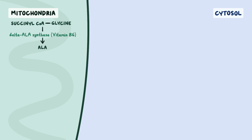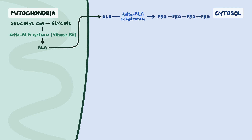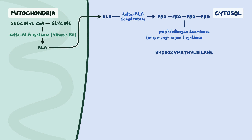Then, in the cytosol, delta-aminolevulinic acid is converted to porphobilinogen, or PBG, via delta-ALA dehydratase. From there, four molecules of porphobilinogen condense together to form hydroxymethylbilane, with the help of porphobilinogen deaminase. Note that porphobilinogen deaminase is sometimes called uroporphyrinogen 1 synthase, or hydroxymethylbilane synthase, or HMBS for short.